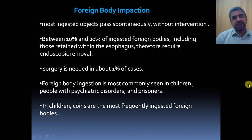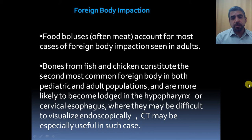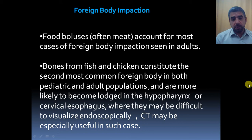In children, coins are frequently ingested foreign bodies, while in adults, food boluses — often meat, and especially camel meat — are a frequent cause of foreign body impaction. Bones from fish and chickens are the second most common foreign body in both pediatric and adult populations and are more likely to become lodged in the hypopharynx or the cervical esophagus. In those locations, endoscopy is difficult to visualize these bones, so CT will be especially useful in these cases.